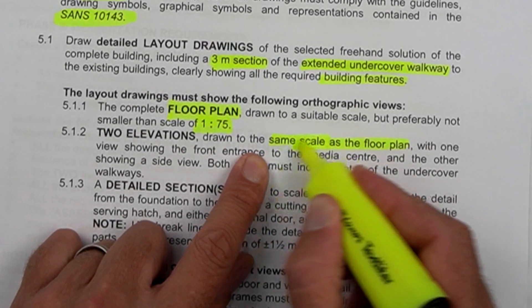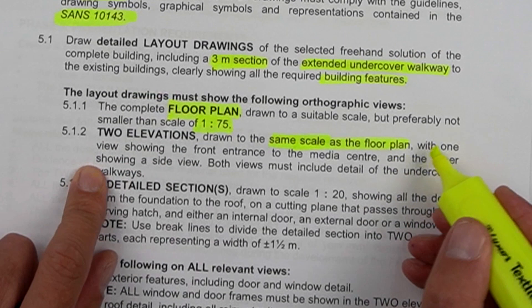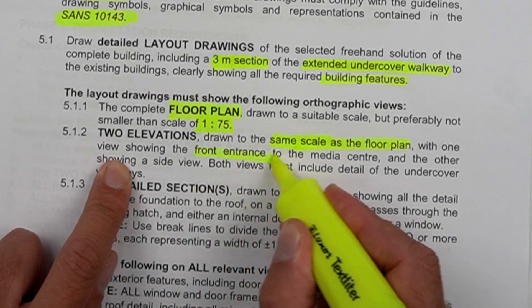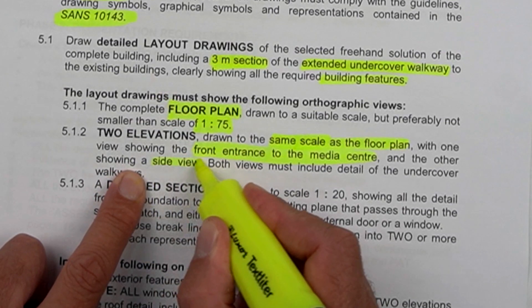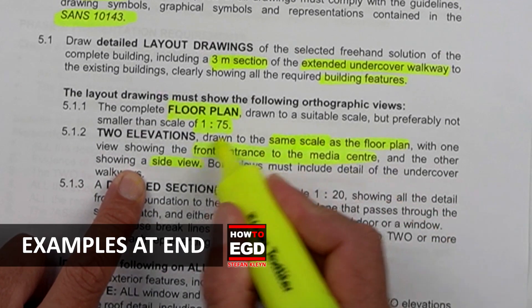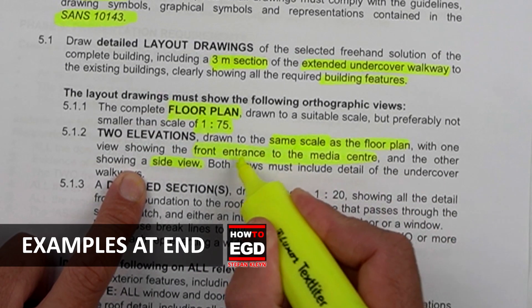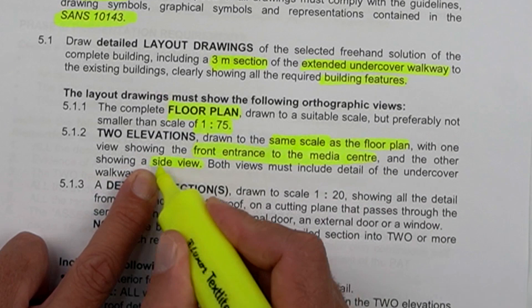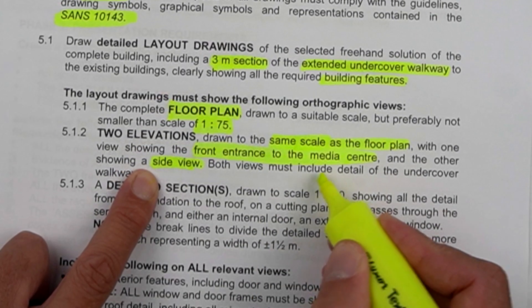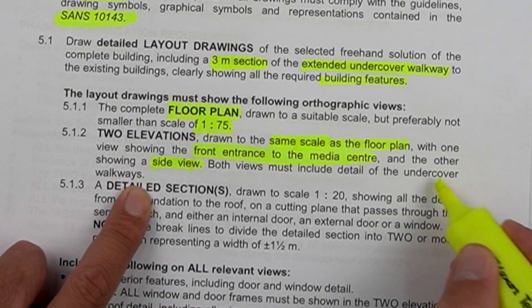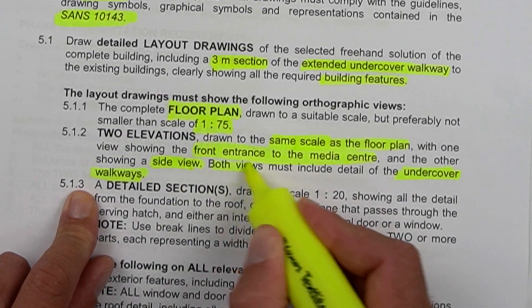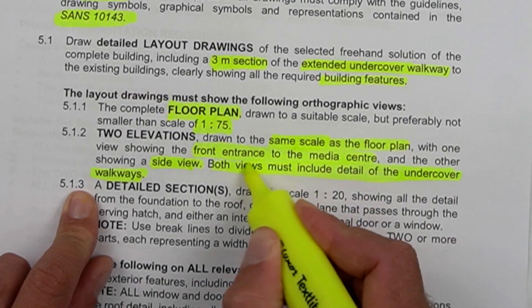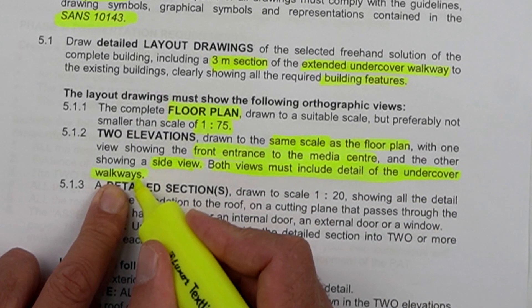Use the same scale as you did for your floor plan, with one view showing the front entrance to the media center and the other view showing a side view. So there's two views clearly shown. The entrance to the media center in the one and a side view in the other. Both views must include detail of the undercover walkways. That's another important point here. Both of these views must include the detail of the undercover walkway.